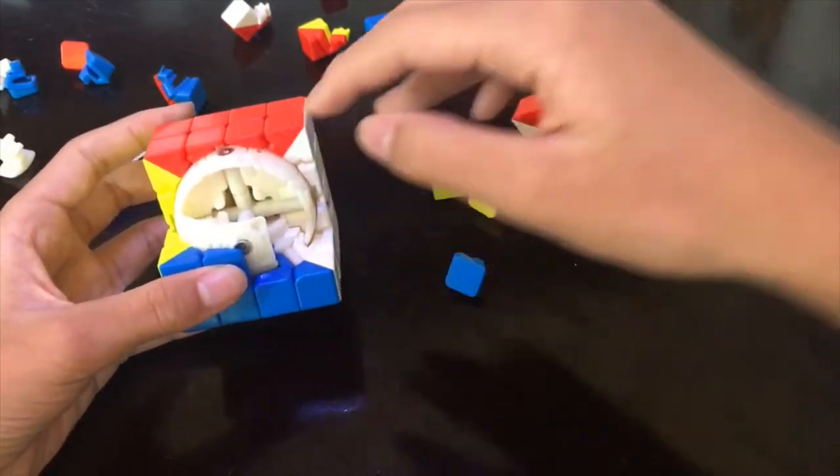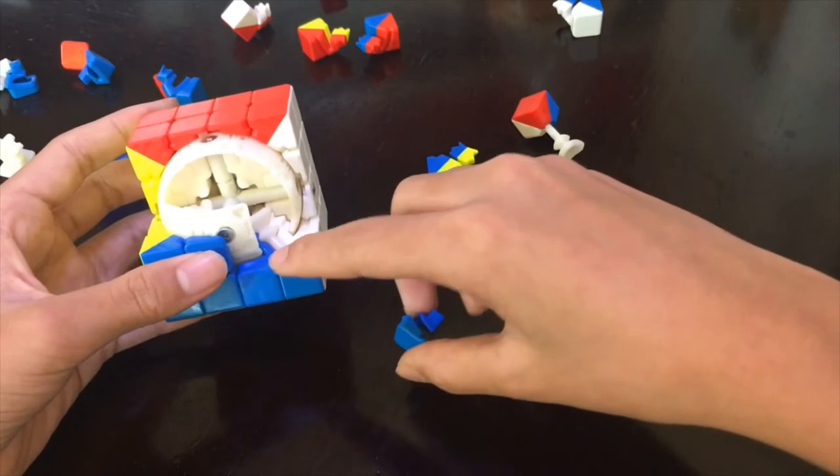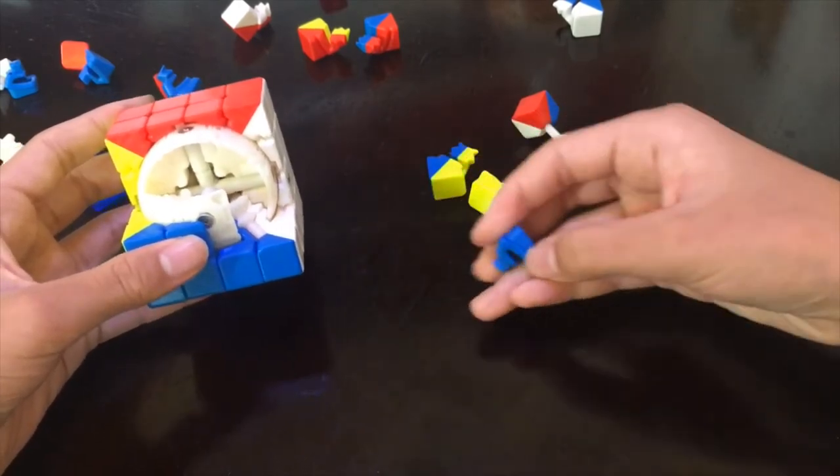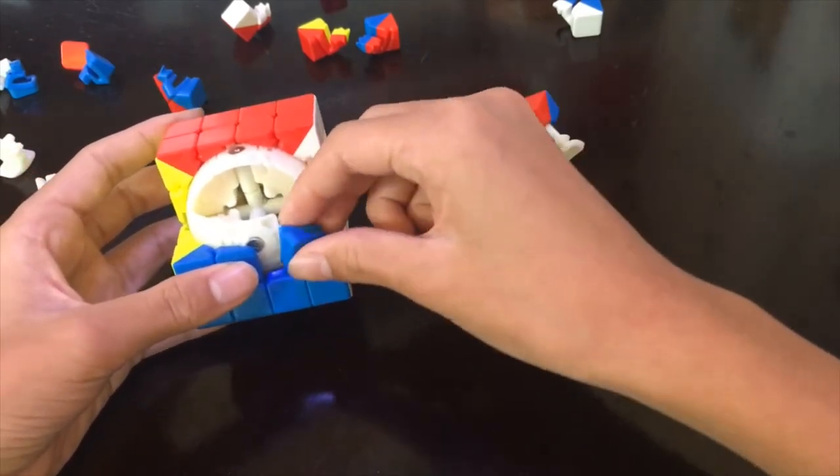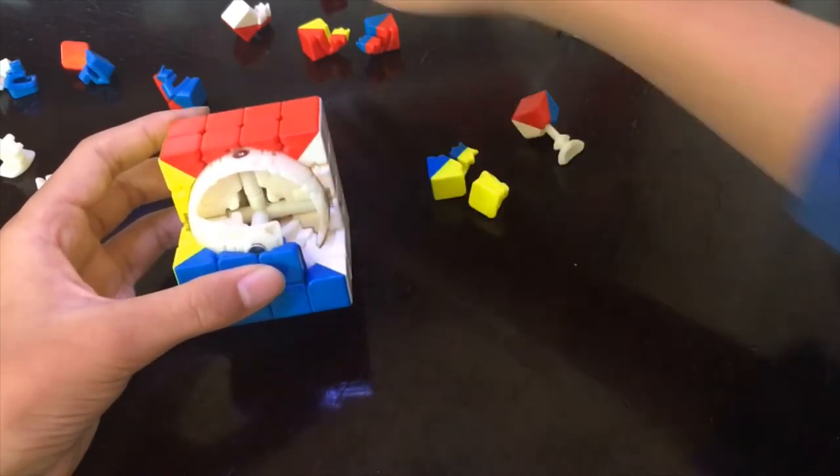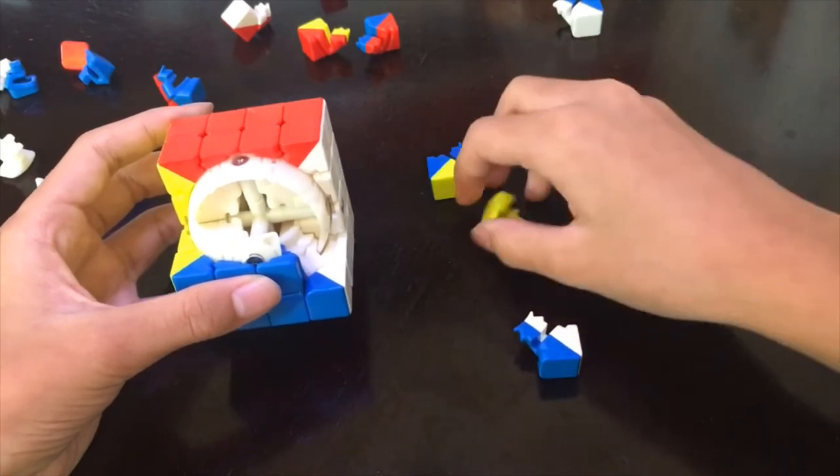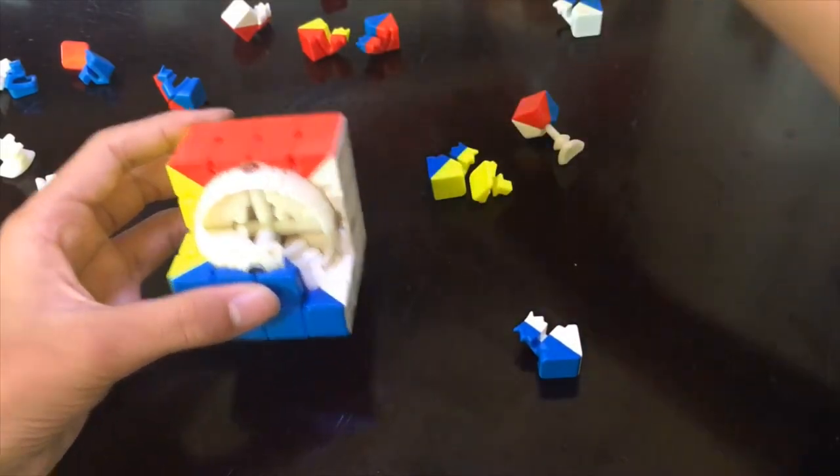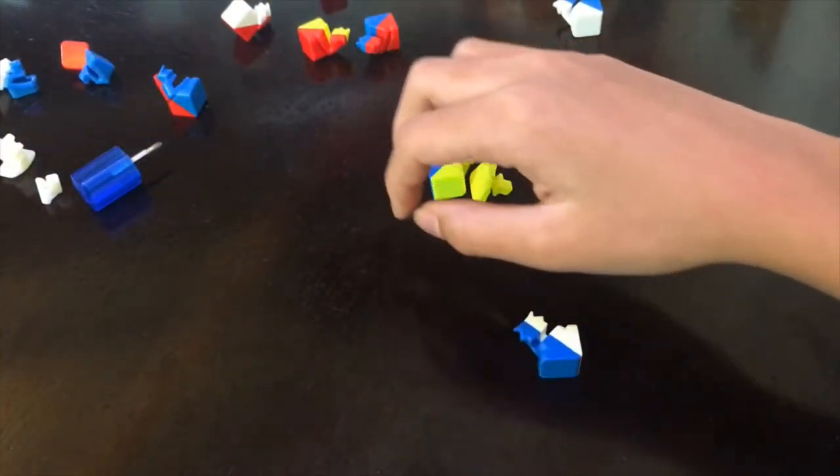So I've already filled in the bottom layer of the block, so let's just continue. So here I put in blue and then I put in this, wait, I put in the center pieces first. We always do the center pieces first. So here's one.